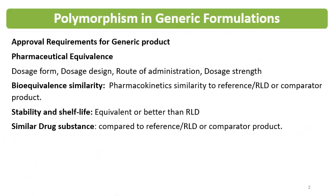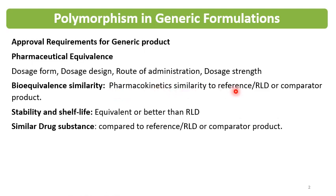Generally, generic formulations require certain qualities to get approval from regulatory authorities. Approval requirements include pharmaceutical equivalence — the generic product must be similar in dosage form, route of administration, and dosage strength. Bioequivalence must also be demonstrated, where pharmacokinetic similarity to the reference listed drug (RLD) or comparator product is shown.